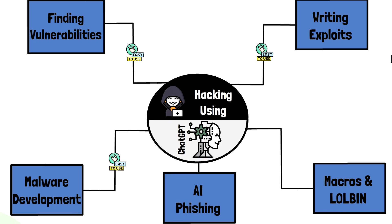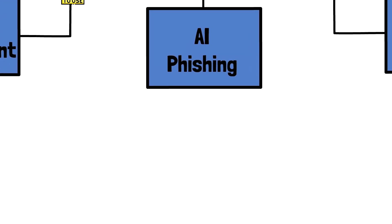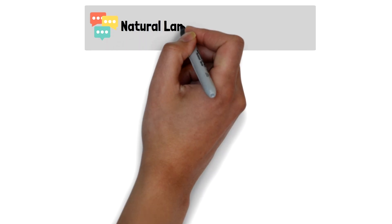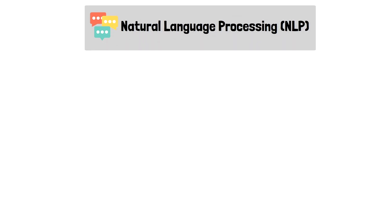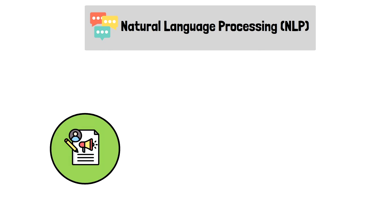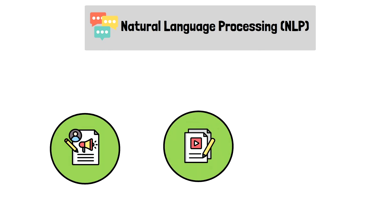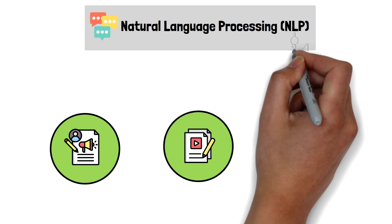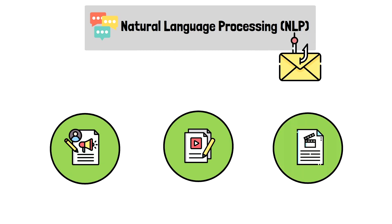One of the things that makes ChatGPT so successful is its natural language processing, or NLP. This allows it to write and respond to virtually any request indistinguishably from a human. This is also why ChatGPT has been used to create amazing marketing and sales materials, scripts for YouTube, screenplays, and much more. ChatGPT's amazing capability of writing well-thought-out text can also be utilized for writing phishing emails at scale.